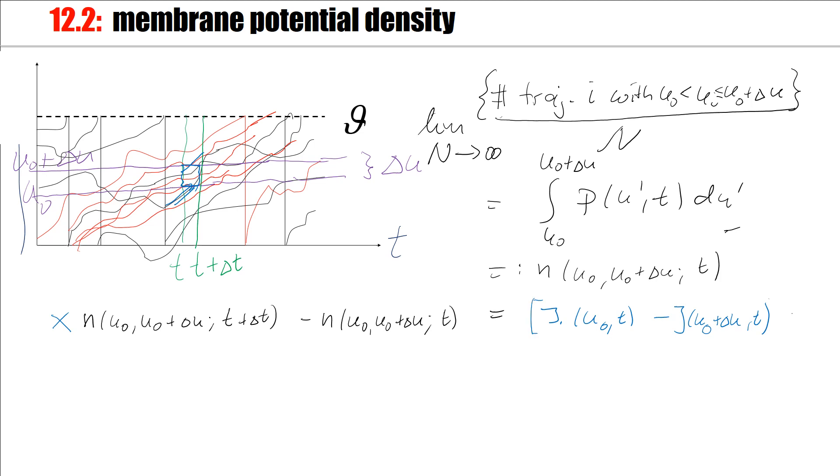And now this number of trajectories will, of course, depend on how long is my interval delta t. So I multiply here with delta t. So to be a bit more precise, N times j of u0 times delta t is the number of trajectories that pass from below through u0.